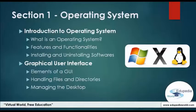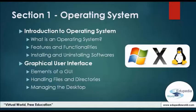In the first subsection, we will discuss what is an operating system, why we need an operating system, and what are the available operating systems nowadays. Through a tutorial session we will show you some basic features and functionalities of an operating system, and then demonstrate how to install and uninstall software. In the second subsection, we will discuss the elements of a GUI — for example, icons, windows, taskbars, etc.